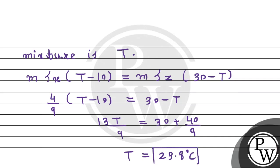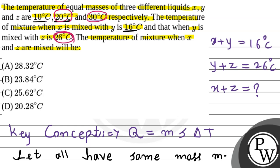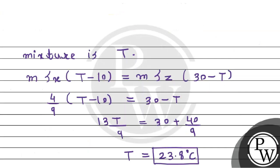Therefore, the final temperature of the mixture of X and Z is 23.8 degree Celsius. So this is the required solution which we have solved by using the formula of heat gained and heat lost. This is the required solution. I hope you understand. Best of luck. Thank you.